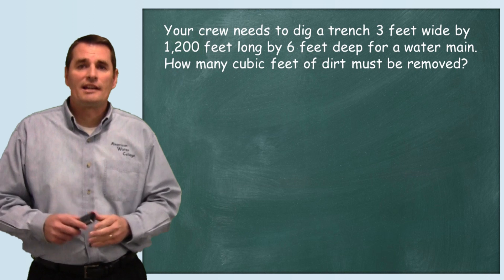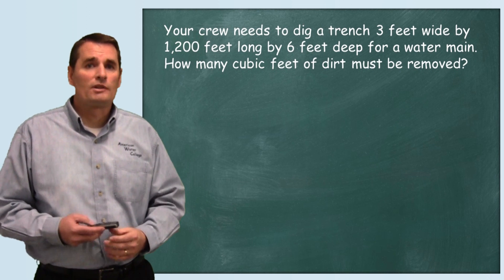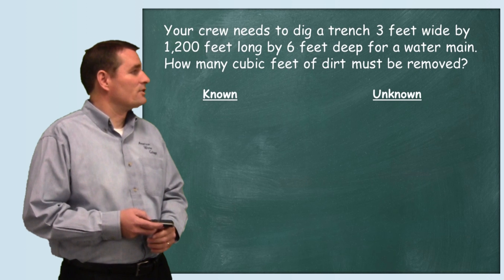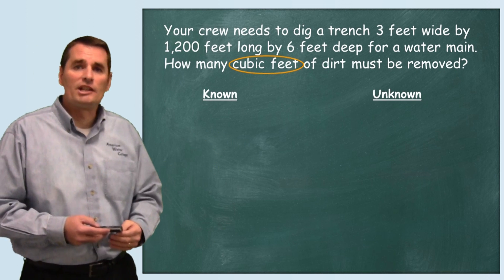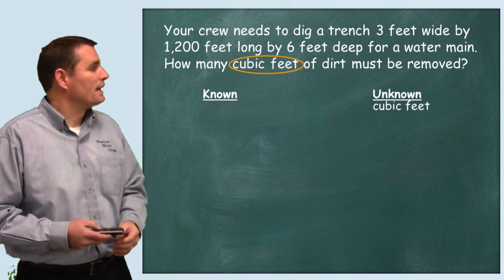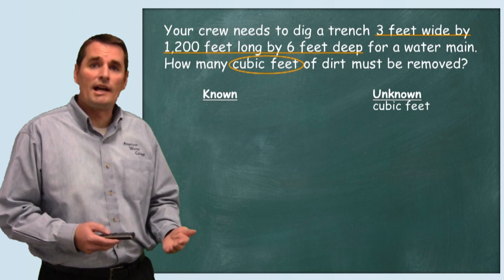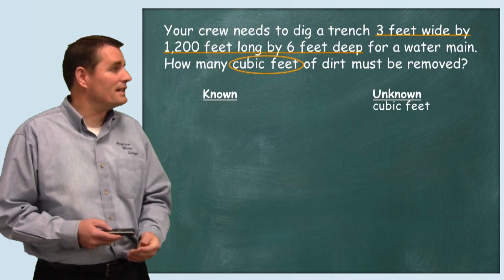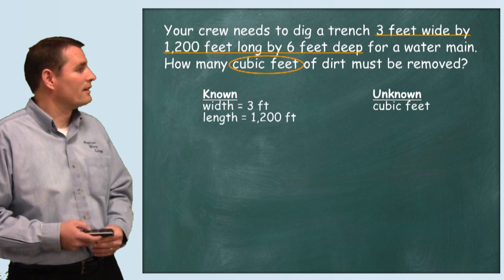We're going to do this like we do every other problem and we're going to pull the numbers out. So we're going to write down our known and our unknown information. The problem tells us that we're looking for a volume in cubic feet, so we write that down. It also tells us that we need it to be three feet wide, 1,200 feet long, and six feet deep. So we'll write down our width, our length, and our depth.